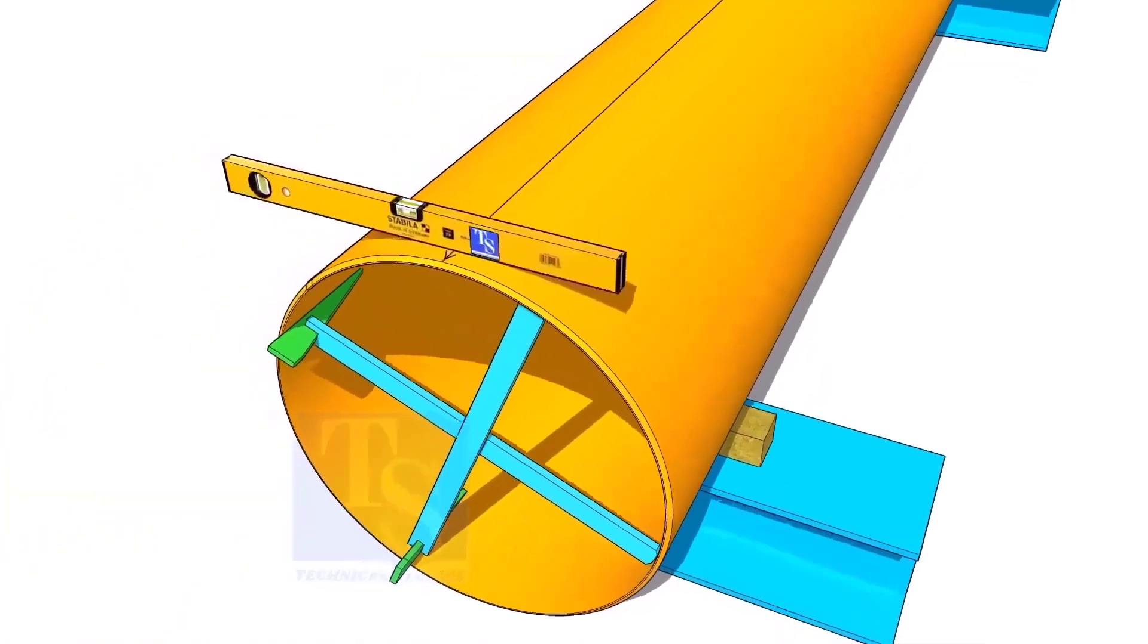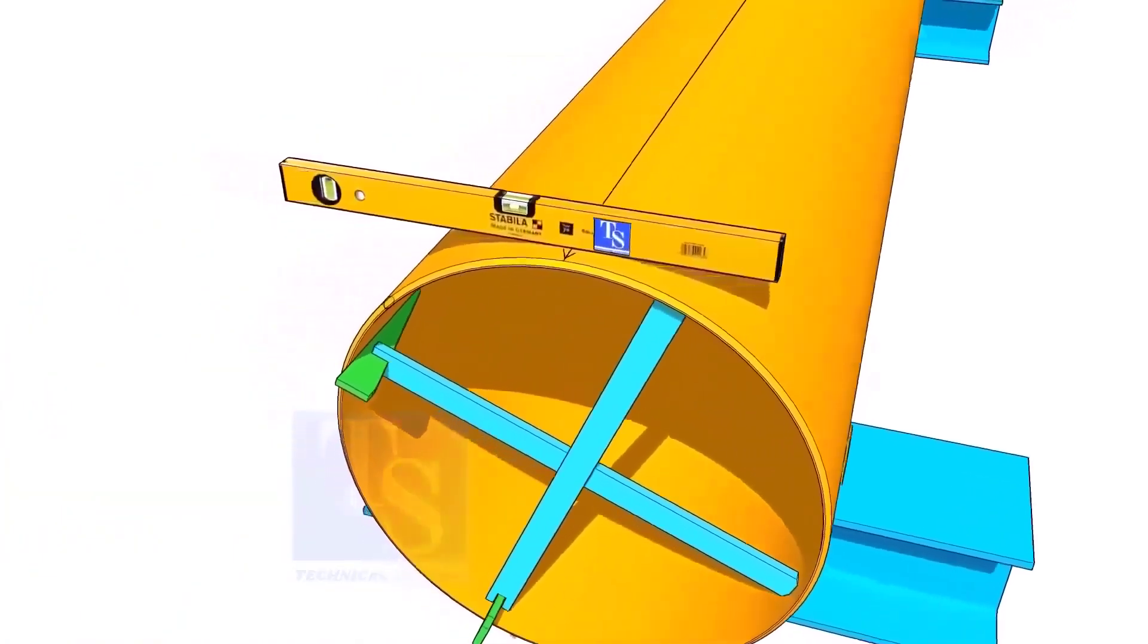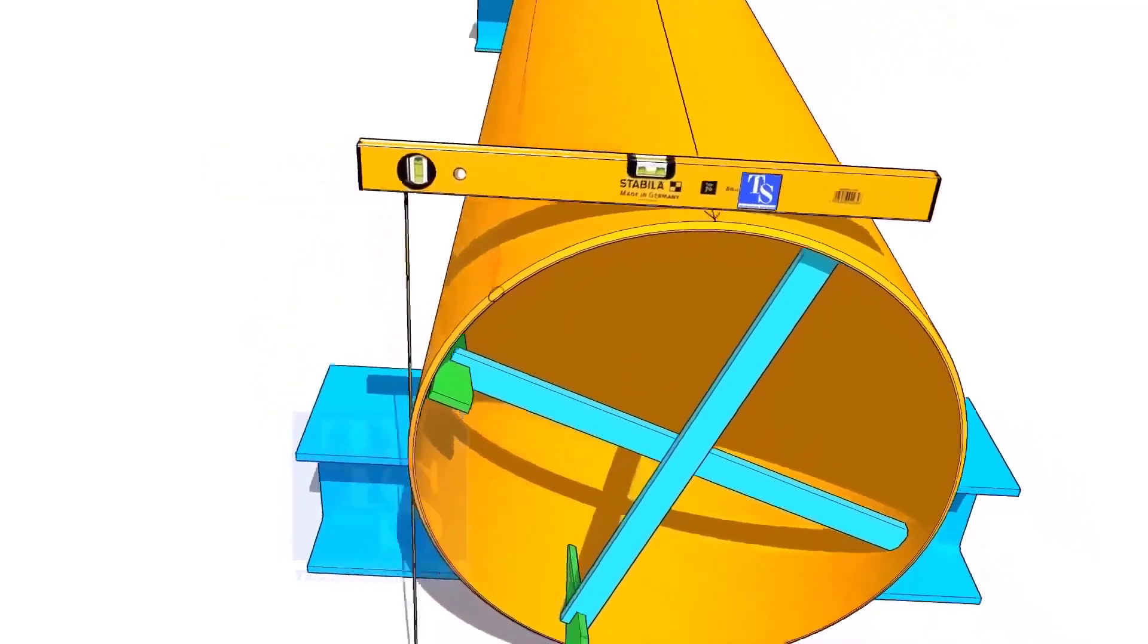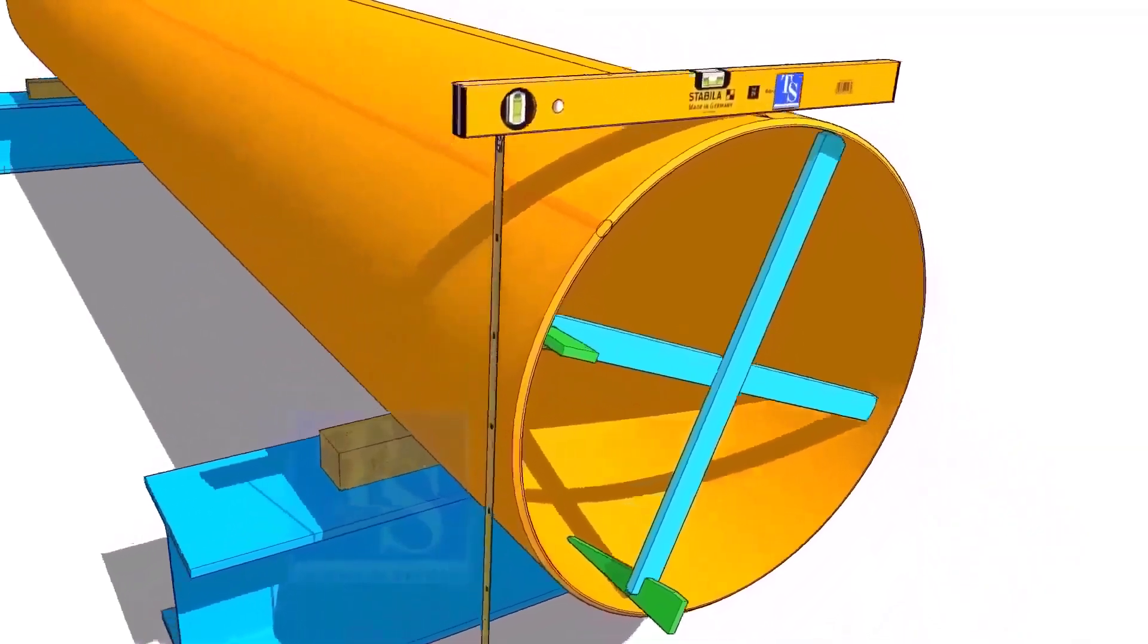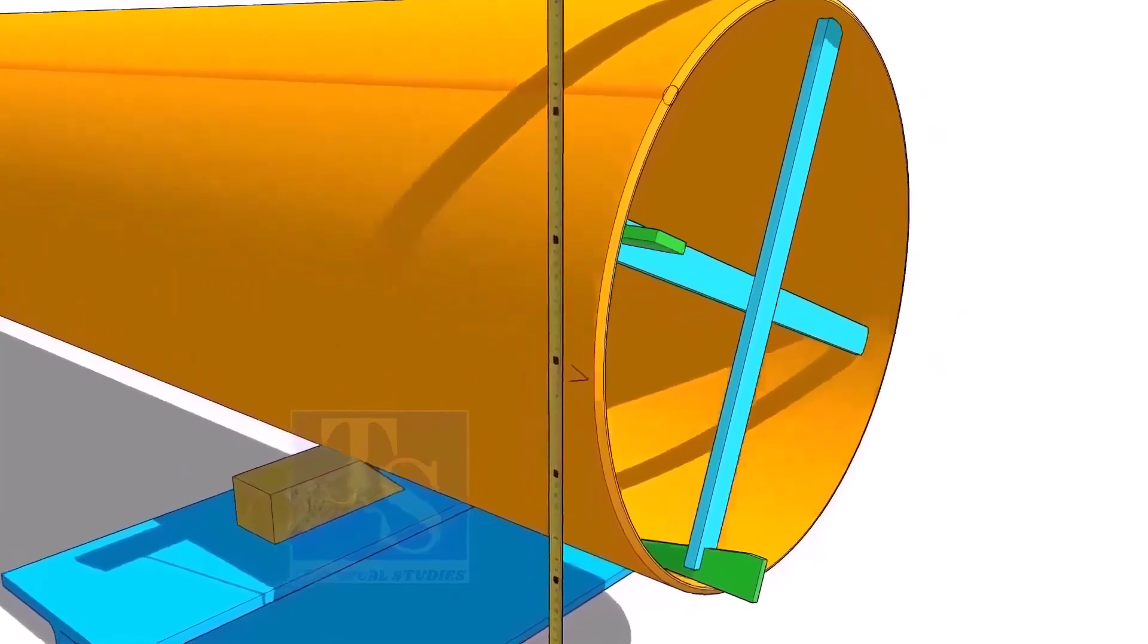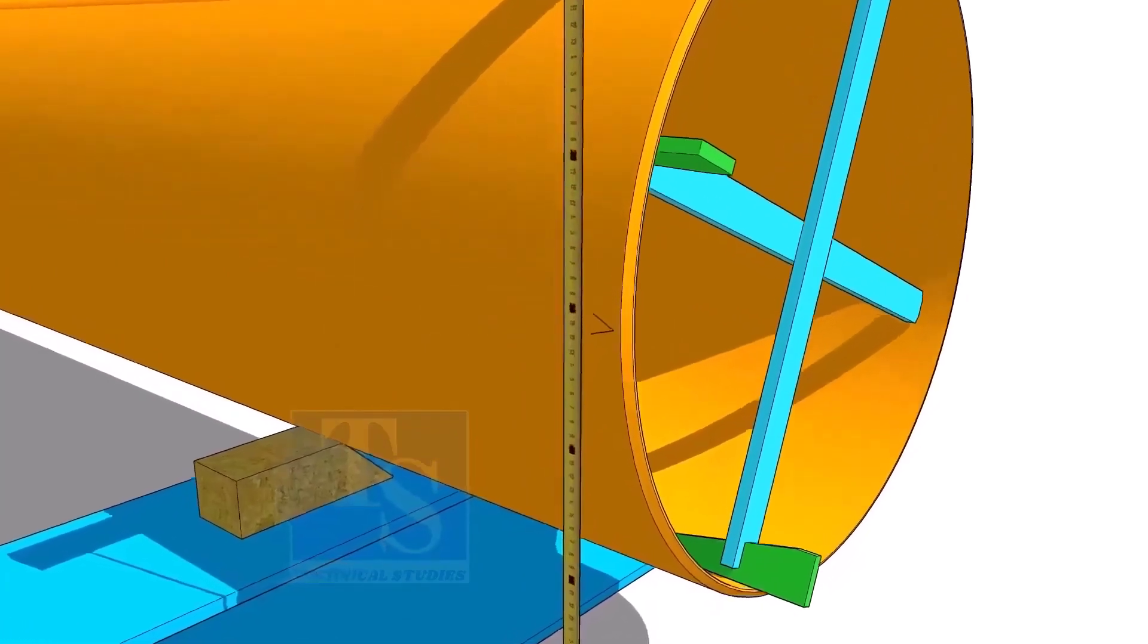Another method to mark the center line is to hold the level bottle horizontal and mark half OD on the side of the pipe. The advantage of this method is you can mark two opposite center lines at the same time.